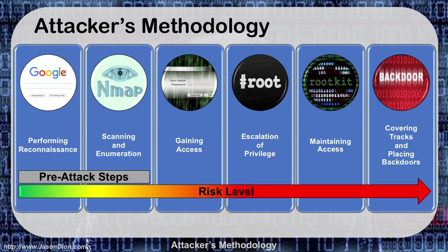Notice the risk level — we increase our risk as we move towards the right. As we get into stages three, four, five, and six, we have much more risk of getting caught because we're on somebody's network. It's fairly low risk performing reconnaissance, and you'll find out why as we move through these phases.